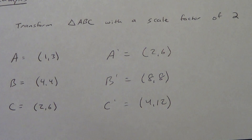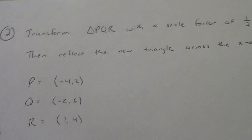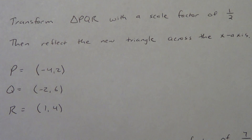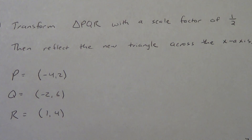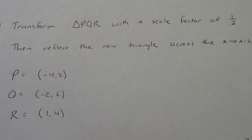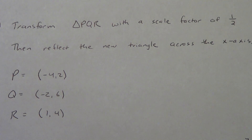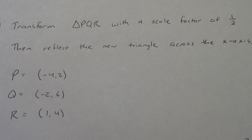So let's take a look at example number two. We are going to transform triangle PQR with a scale factor of one half. And then, as a little extra, we're going to reflect the new triangle across the x-axis — a review of what we learned in a prior chapter: reflections, rotations, and translations. So go ahead and graph that triangle PQR. The points are negative four, two; negative two, six; and one, four. Pause the video if you need to get that graphed on your paper, or go ahead and do the whole problem on your own and then check your work.